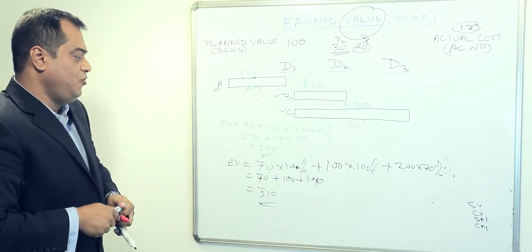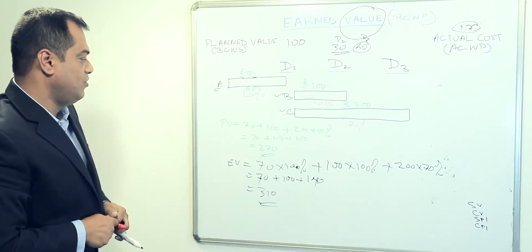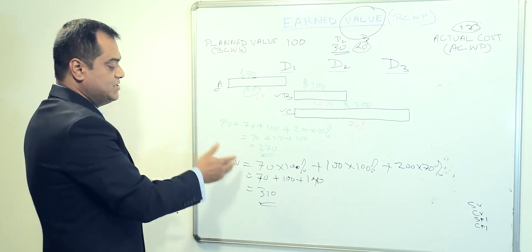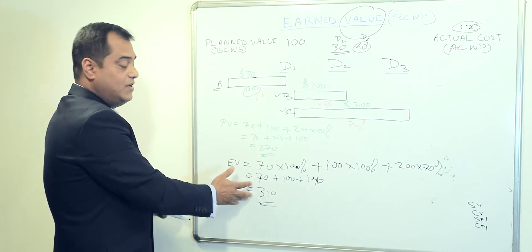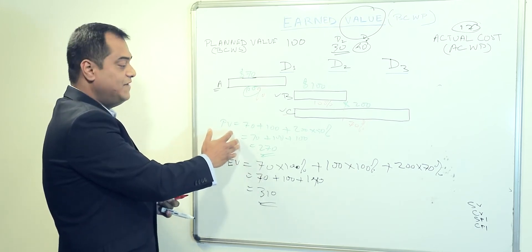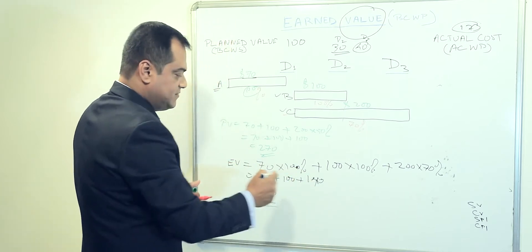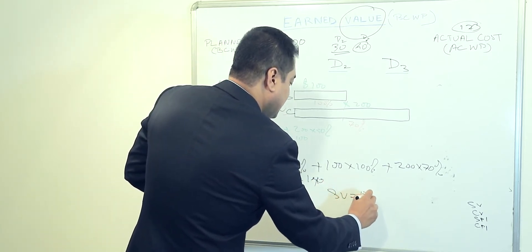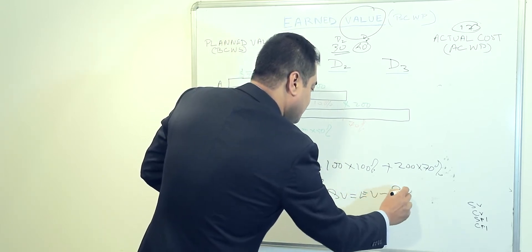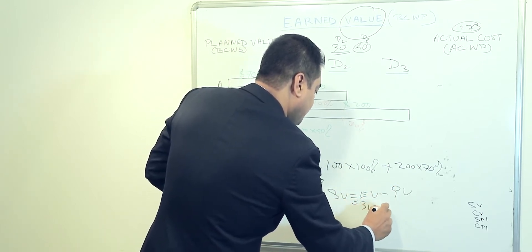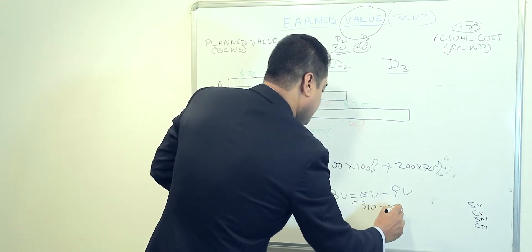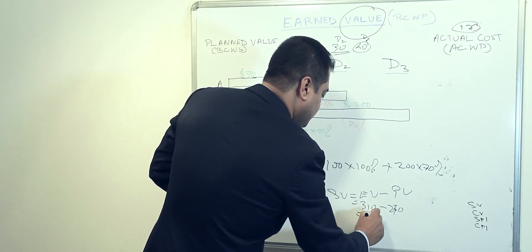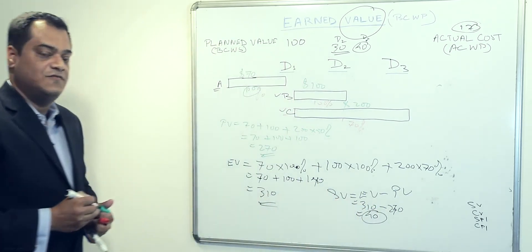If you want to compare between these two, which is called schedule variance, you are comparing the schedule of estimate earned value against plan value. So that comes with schedule variance. Earned value minus plan value, that makes it 310 minus 270, and that comes to 40. So the schedule variance is 40.